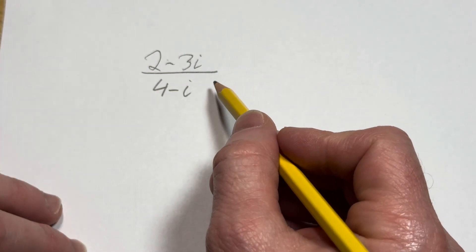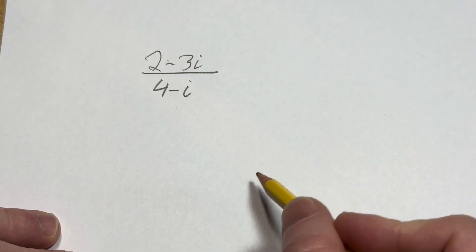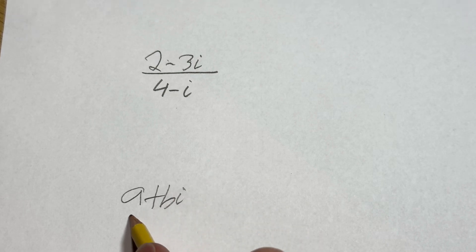So in a problem like this, the first thing you want to do is multiply by the conjugate. Basically, if you have a complex number, let's just say I'll show you down here, a plus bi, the conjugate is going to be a minus bi.